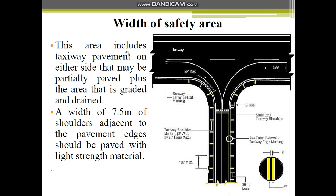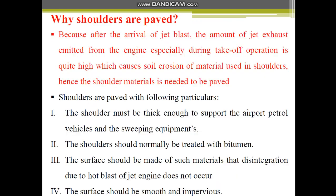The safety area includes the taxiway pavement plus area on either side that may be partially paved, graded, and drained. A width of 7.5 meters of shoulders adjacent to pavement edges should be paved with light-strength material. These shoulders act as a safety area used in emergencies for stopping. Shoulders need to be paved because the jet exhaust emitted from engines — especially during takeoff — is quite high and causes soil erosion of shoulder material.